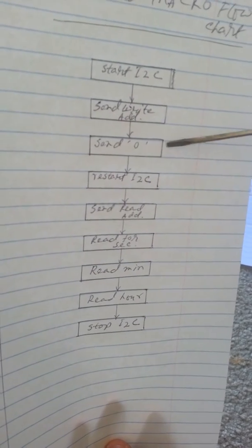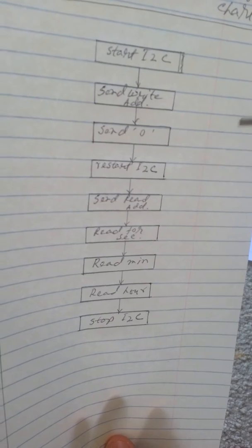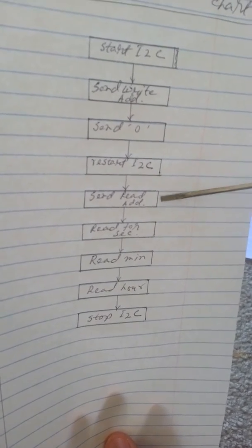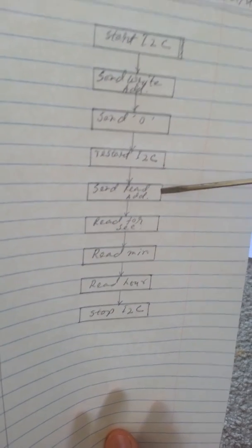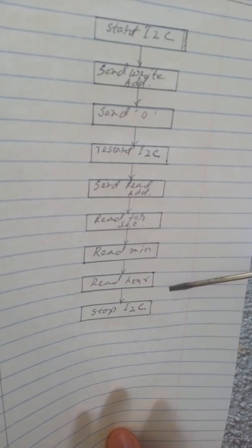Then you need to send 0. When you send the 0, basically it will set the pointer to the 0 location of the memory. Then you need to restart the I2C. Then finally, you need to send the read address. Then you can continuously read second, minute, hour, and so on if you want.